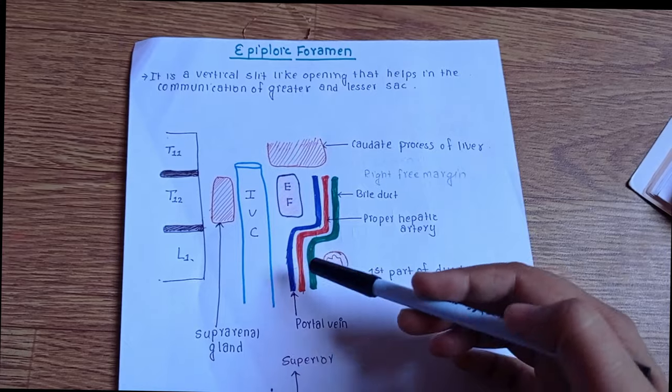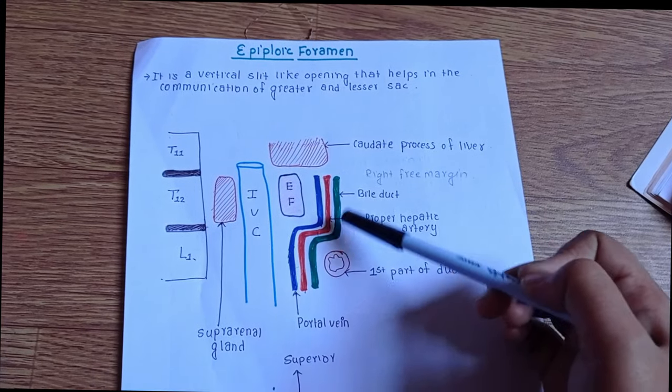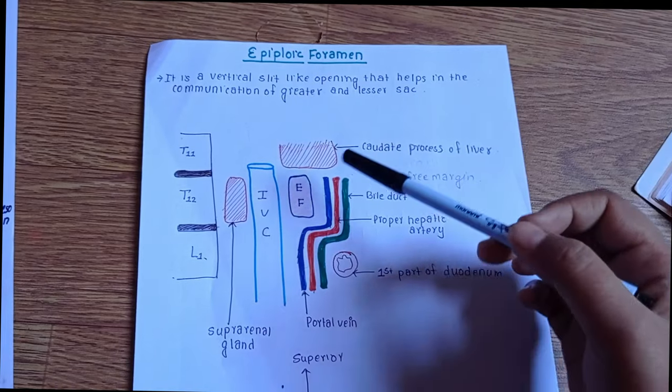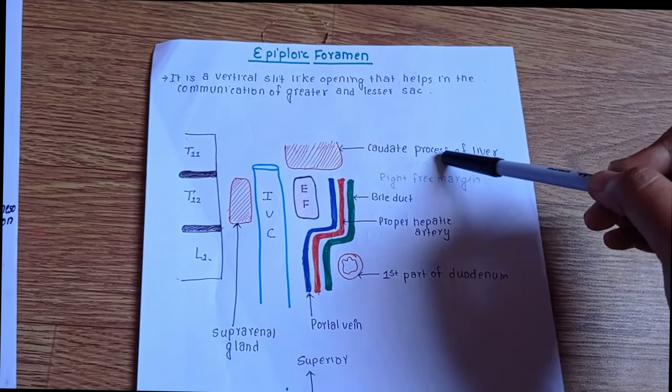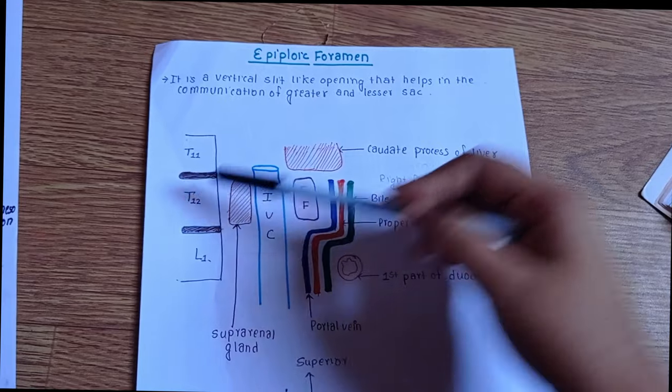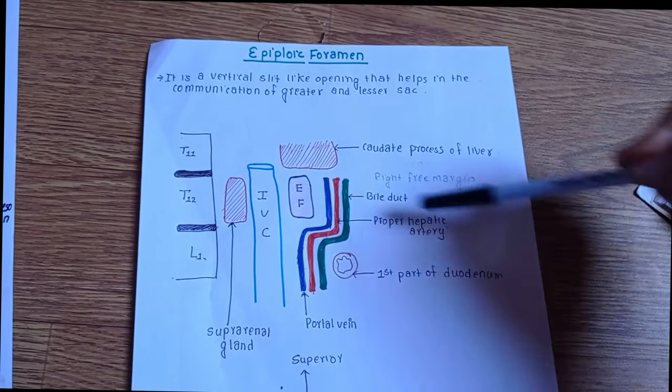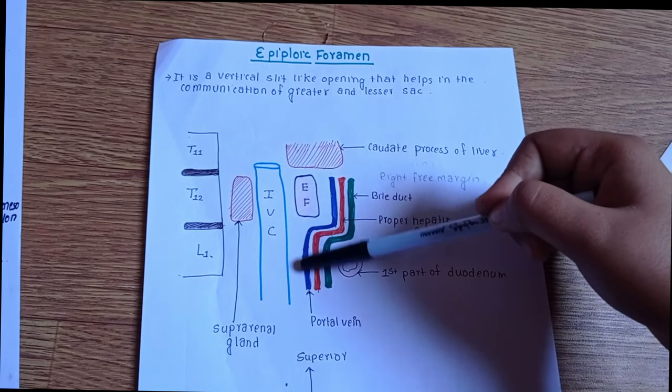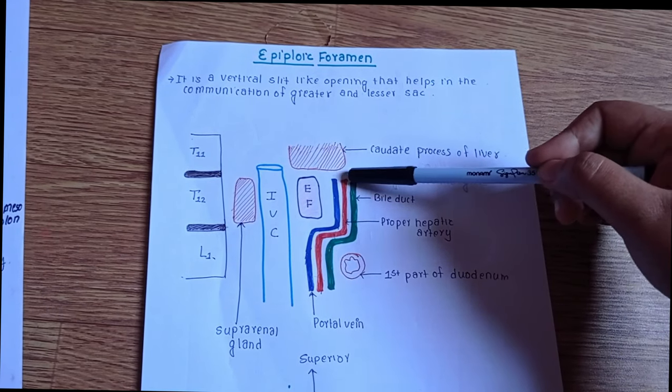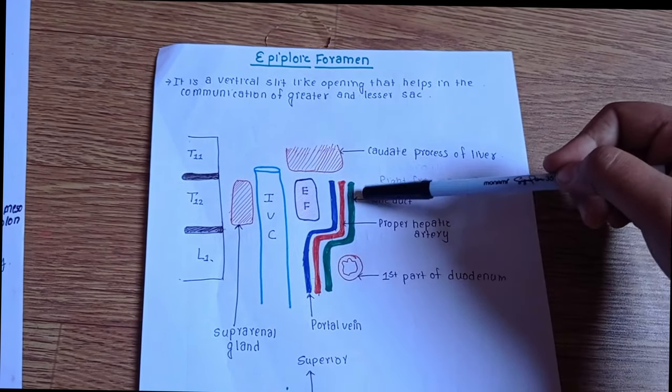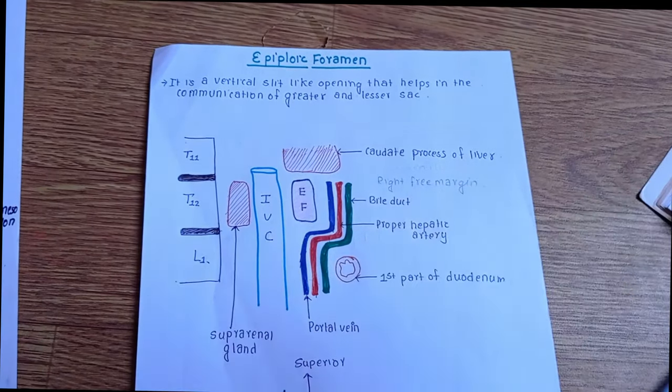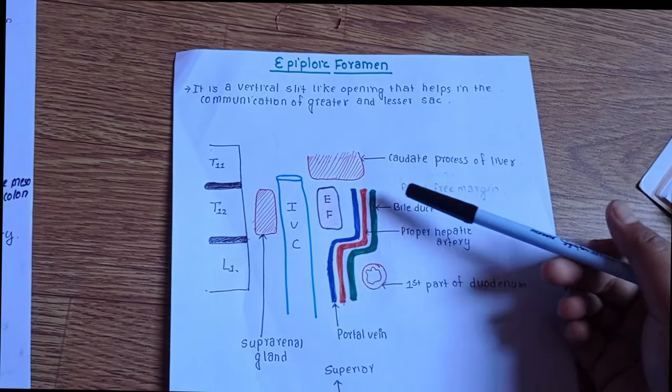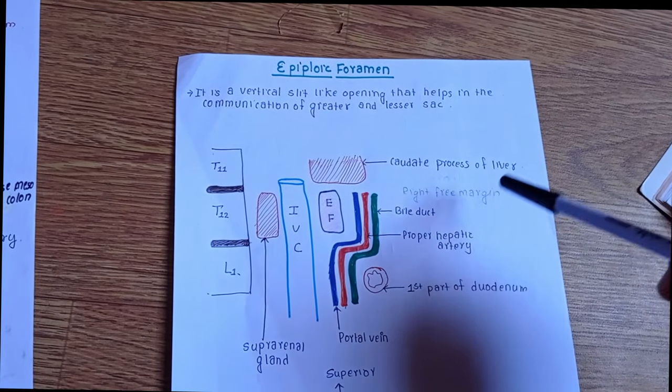Let us talk about the boundaries of the epiploic foramen. This one is our anterior side. As we can see the vertebra here, this must be the posterior side. In the anterior side we have our portal vein, hepatic proper, hepatic artery, bile duct, and the right free margin of the lesser omentum.